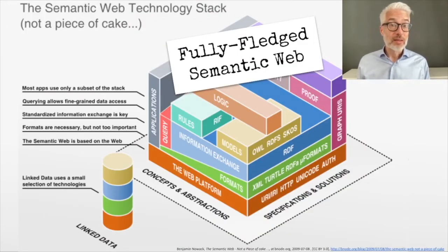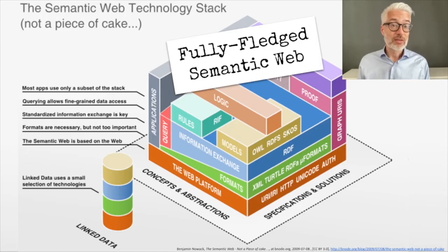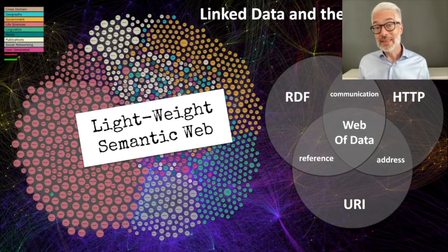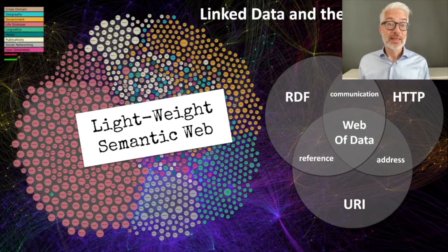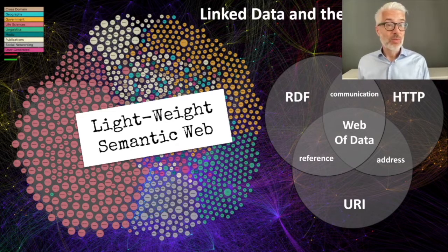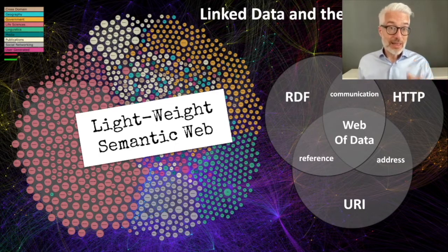We distinguished between the fully-fledged semantic web — with all the semantic web technologies in the semantic web technology stack — and a lightweight semantic web, which we see currently and daily in the web of data. In the web of data, the interconnected things — linked data — are based on the linked data principles that we talked about extensively and will recapitulate again in this lecture.